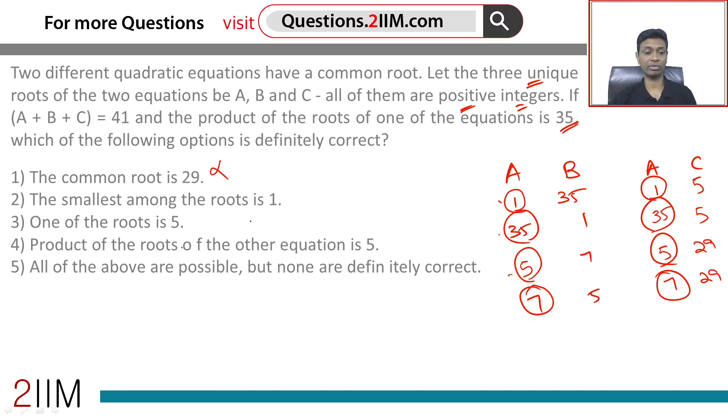No. One of the root is 5. Might this be true? Here the root is 5, here it is 5. Yeah, that is true. Product of the roots of the other equation is 5. Doesn't work.